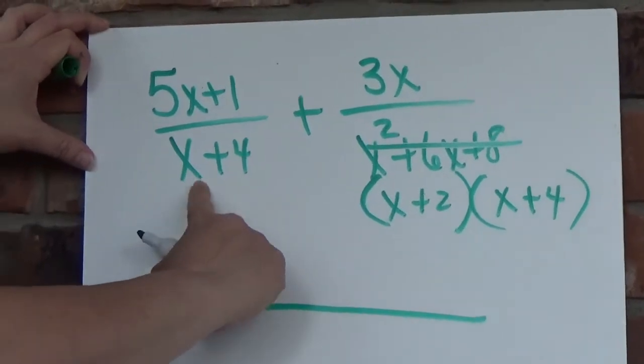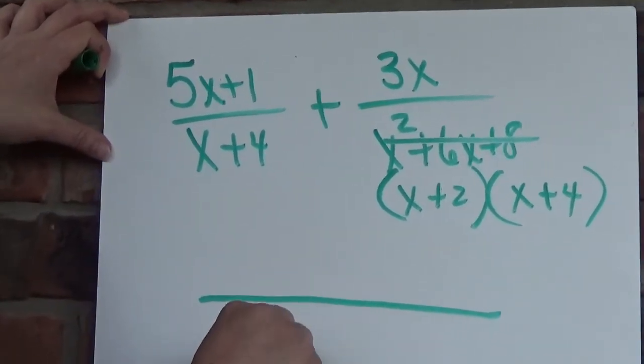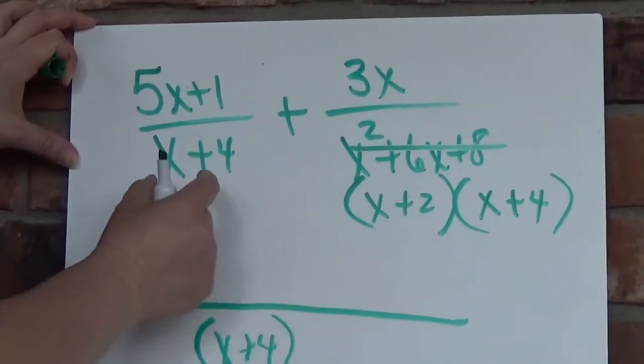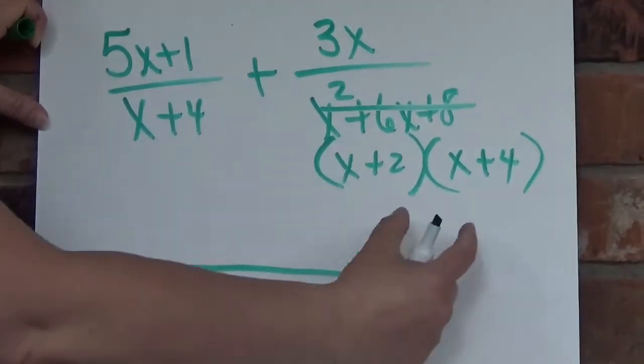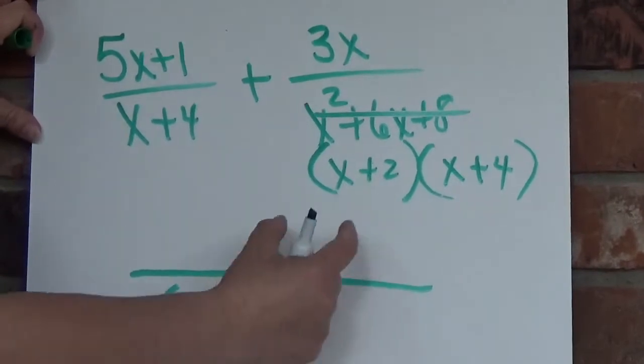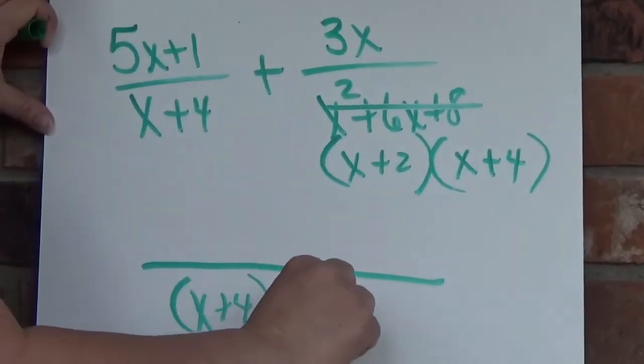So here, the factor x plus 4 needs to be represented. Now this fits into here, and then I need to find out if this fits into here. Well, I already have the x plus 4, but I don't have the x plus 2 yet, so I have to add that in.